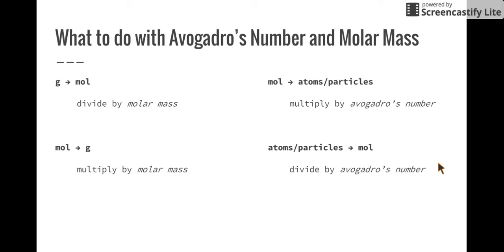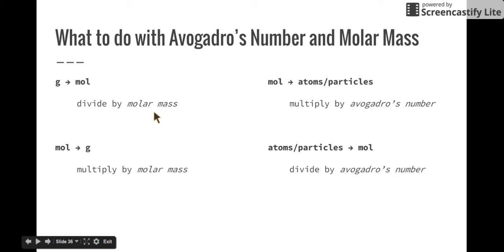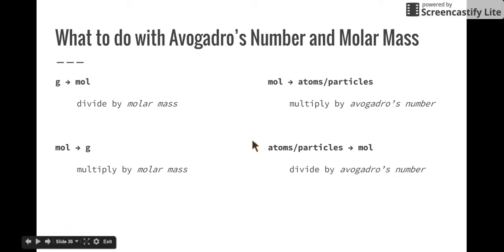Here's a summary of what you can do with Avogadro's number and molar mass. To convert grams to moles, divide by the molar mass of the substance. To convert moles to grams, multiply by the molar mass. To convert moles to atoms or particles, multiply by Avogadro's number — 6.02 times 10 to the 23rd. And if you have atoms or particles and want to find moles, divide by Avogadro's number.